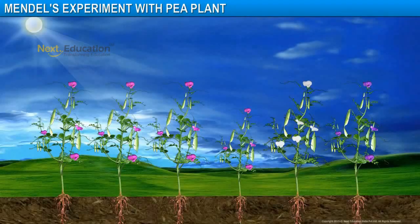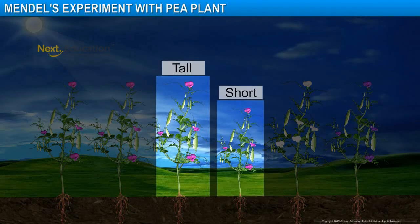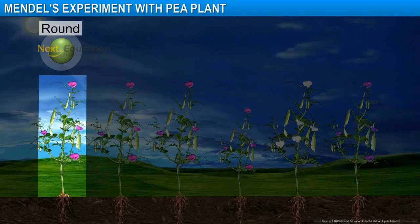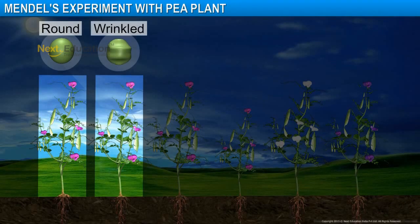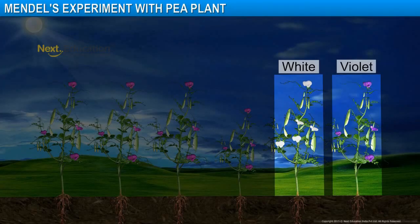He used a number of pea plants with various traits, such as tall or short plants, round or wrinkled seeds, white or violet flowers, and so on.